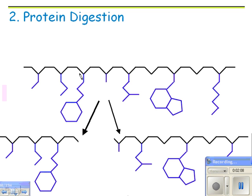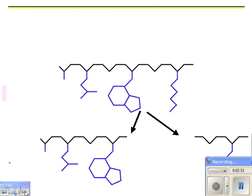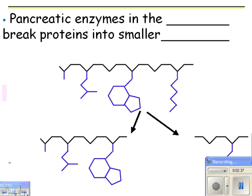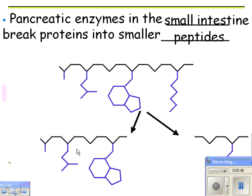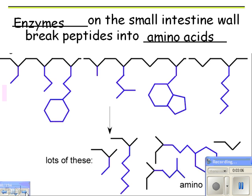Protein digestion: a polypeptide is broken down into smaller peptides. Enzymes in the stomach break down proteins to peptides. Then there are more enzymes from the pancreas working in the small intestine — pancreatic enzymes in the small intestine break proteins down into smaller peptides. The last step is enzymes on the small intestine wall breaking those smaller peptides down into amino acids — the monomers.